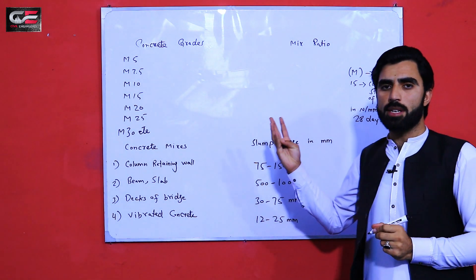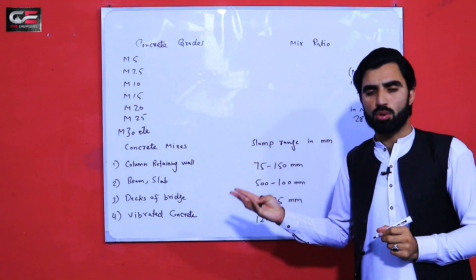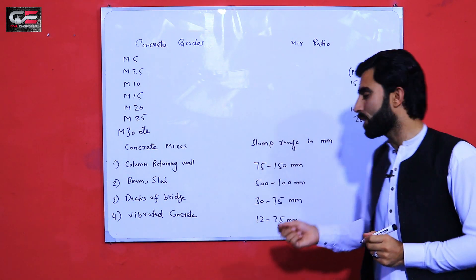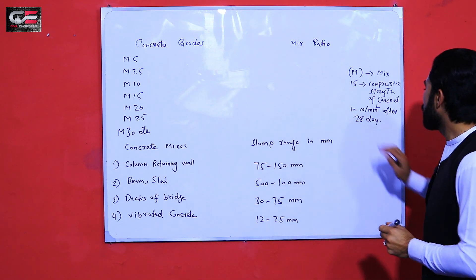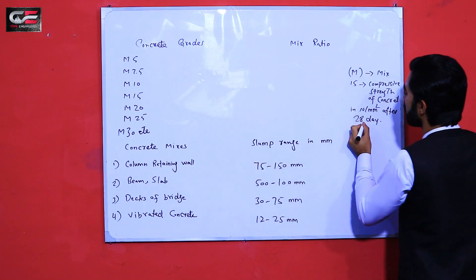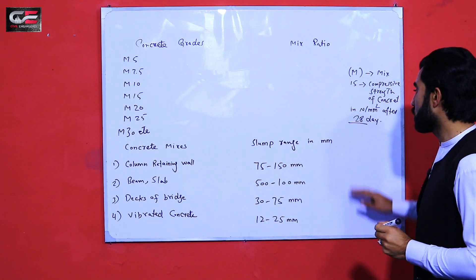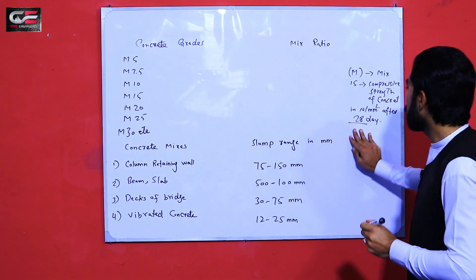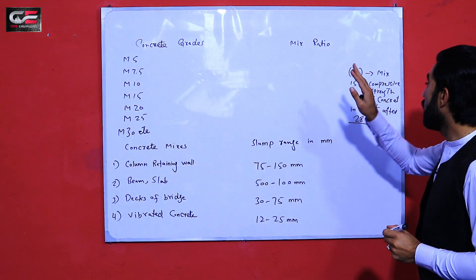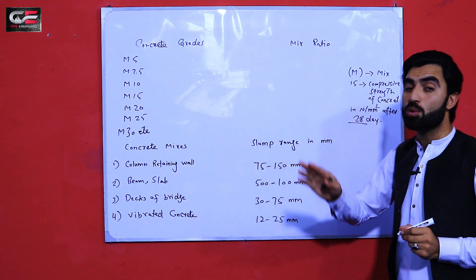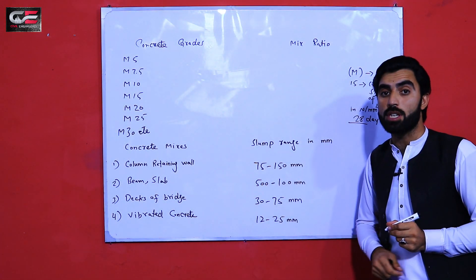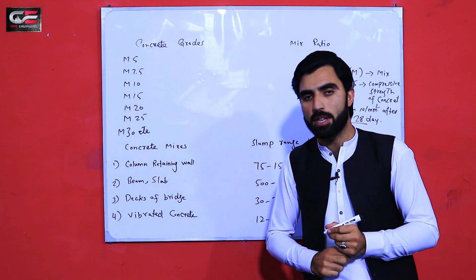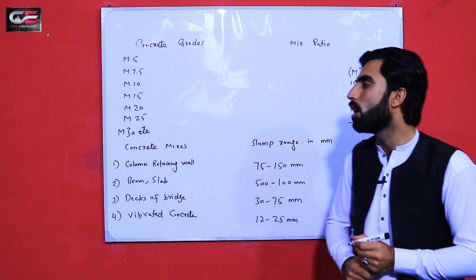We test concrete in a compression machine at seven days, fourteen days, twenty-one days, and finally twenty-eight days, because concrete reaches its full strength — about 99% — after 28 days. So the number in the grade represents the compressive strength in Newton per mm² after 28 days.